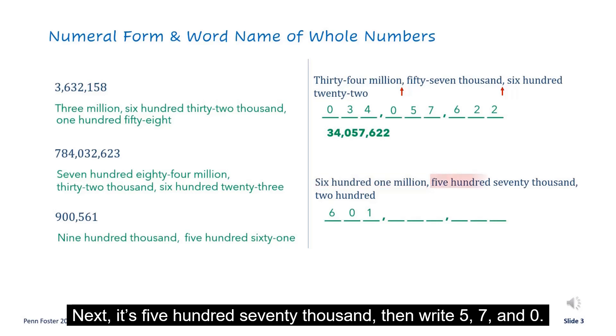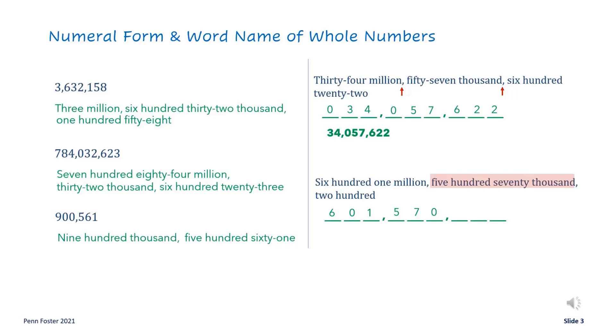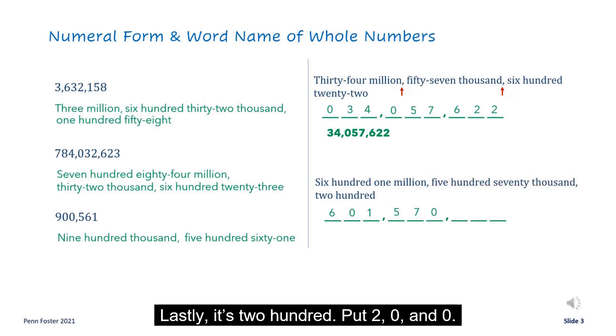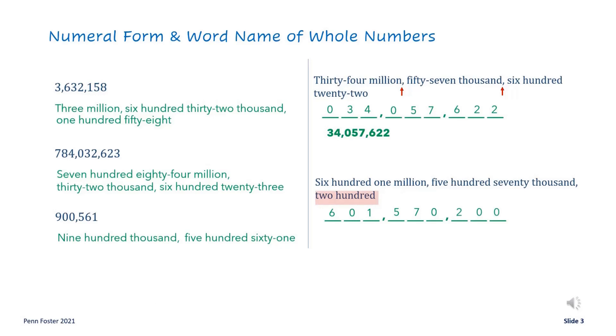Next, it's five hundred seventy thousand — write 5, 7, and 0. Lastly, it's two hundred — put 2, 0, and 0.